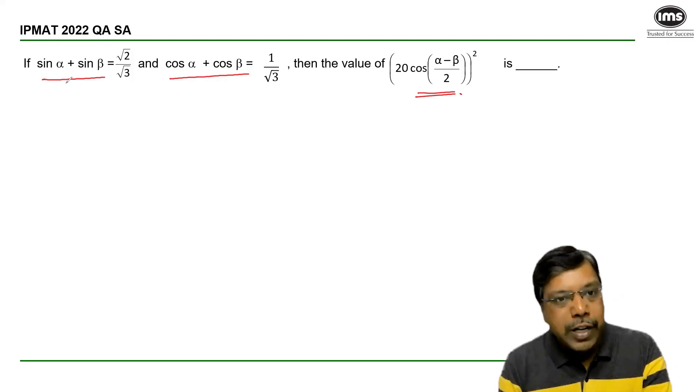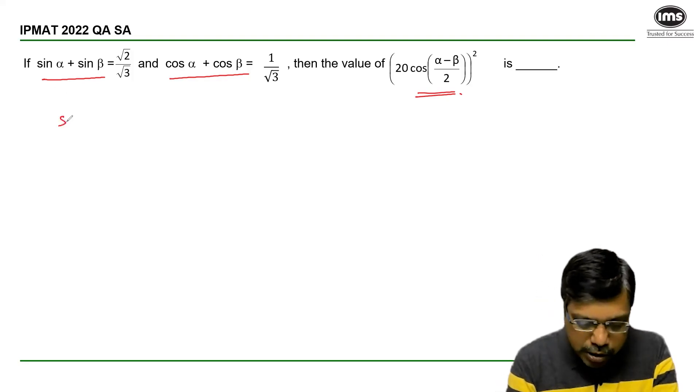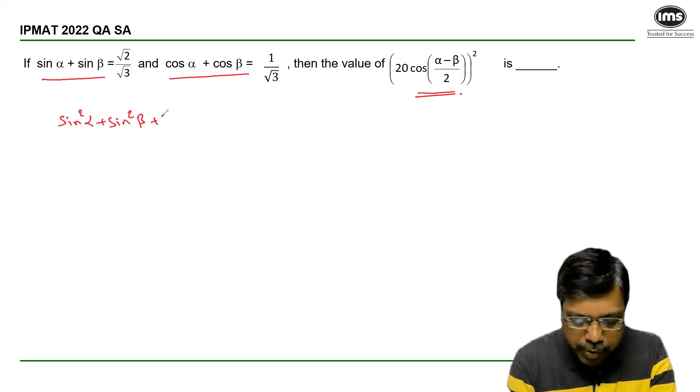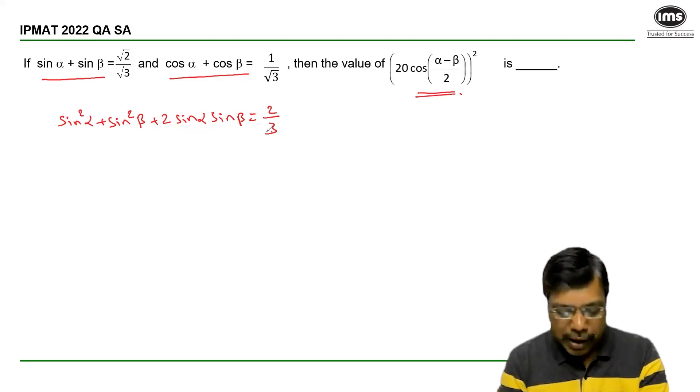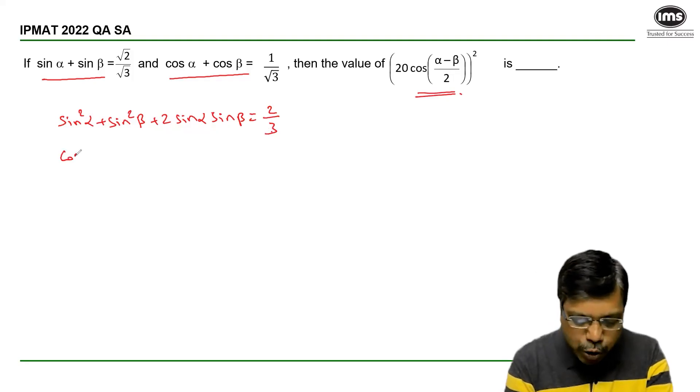I will square both the equations. So I will get sin square alpha plus sin square beta plus 2 sin alpha sin beta is equal to 2 by 3. The second equation if I square I get cos square alpha plus cos square beta plus 2 cos alpha cos beta is equal to 1 by 3.